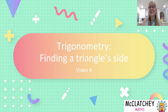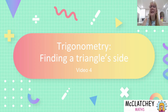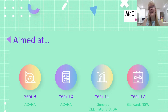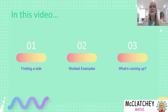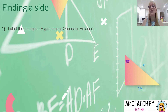Hi, welcome back to McClutchy Maths. My name is Natalie McClutchy and today we are continuing our video series on trigonometry by looking at how to find a side on a right-angled triangle. This is our fourth video in our series, aimed at students from grade 9 through to grade 12. In this video you're going to find out, using some worked examples, how to find a side.